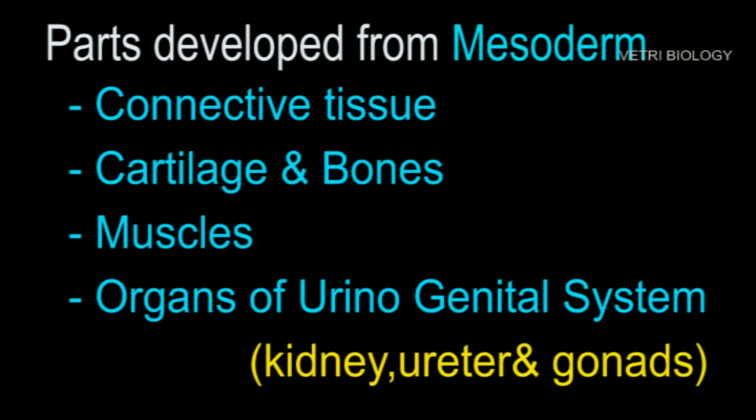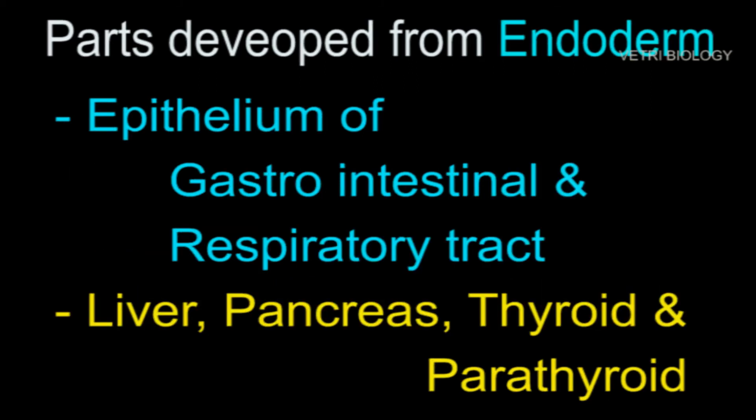From the mesoderm, connective tissue, cartilage and bone, muscles, and organs of the urogenital system — including kidney, ureter, and gonads — are developed. From the endoderm, the epithelium of the gastrointestinal tract — that is the stomach and intestine — the respiratory tract, liver, pancreas, thyroid, and parathyroid are developed.